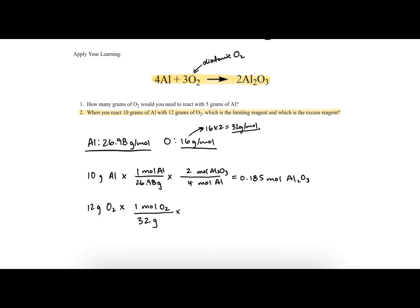We use the ratio from the chemical equation, which is 2 moles of Al₂O₃ to 3 moles of O₂. When we multiply this out, we see we could form 0.25 moles of Al₂O₃.